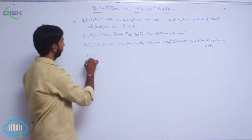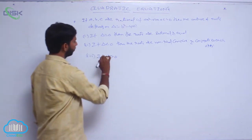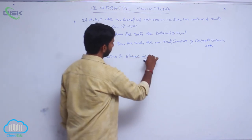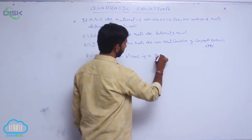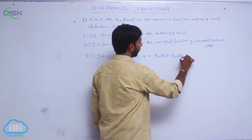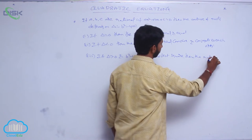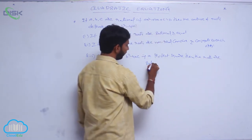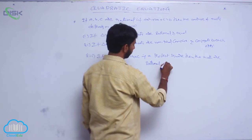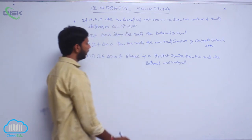Next, if delta is greater than 0 and B² - 4AC is a perfect square, then the roots are rational and unequal.